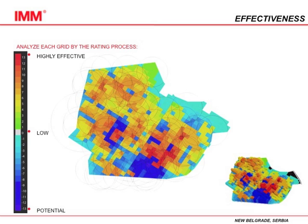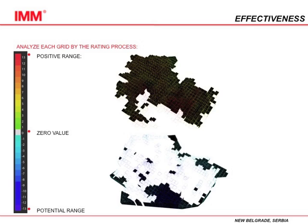Here we can see the spectrum, where 13 — the warmest color — represents the most highly effective areas. Low and zero is where no such areas exist, and the deep blue potential areas are the areas of future development. We have the positive range, zero value, and potential range. The positive range covers warmer colors and covers most of the intermediate scale, with the potential range also visible.